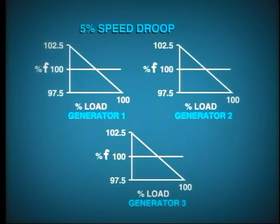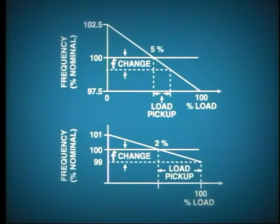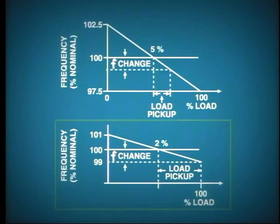If all of the governors on the synchronized generators are set to, say, 5% droop, then they all share in load changes proportionally. However, we may wish to make certain units on the system more responsive to frequency changes than others. This can be achieved by setting the droop characteristic on those units to a lower value. The generator with the lower setting will pick up or throw off proportionally more load than the other generators on the system. Check with your supervisor for correct droop settings on your machines. Remember, the lower the percentage droop, the more sensitive is the governor, and oversensitivity can cause unstable operation and hunting of the unit.